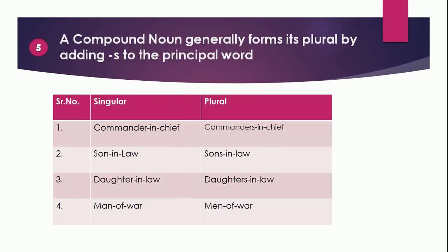Point 5: A compound noun generally forms its plural by adding S to the principal word. Some examples are: commander-in-chief → commanders-in-chief; son-in-law → sons-in-law; daughter-in-law → daughters-in-law; man-of-war → men-of-war. So to form the plural of a compound noun, we generally add S to the principal word.